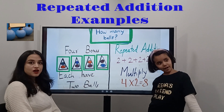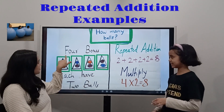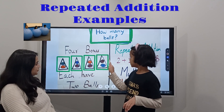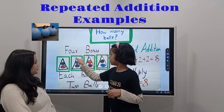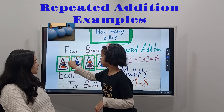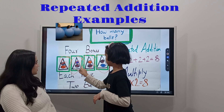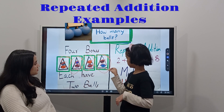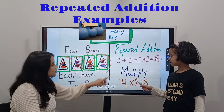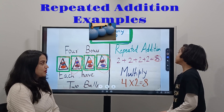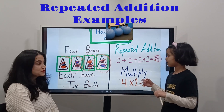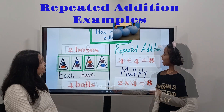And now let's go to the next slide. How many balls? I see here four boxes, each with two balls. That is correct. There is one, two, three, four — and each of them have two balls: one, two; one, two; one, two; one, two. So how can we write it in repeated addition? Two plus two plus two plus two equals eight. And four times two equals eight. So four groups of two balls — how many balls? Eight.